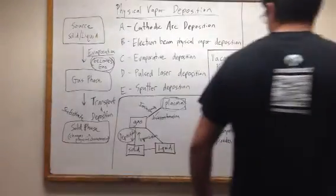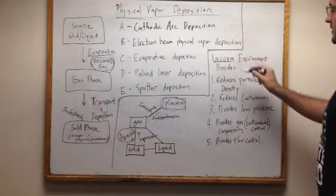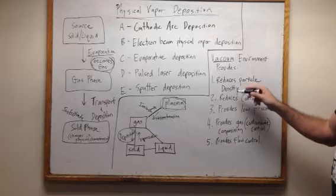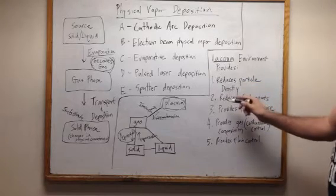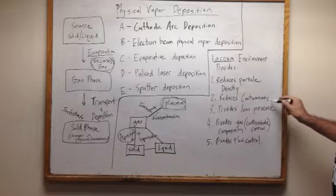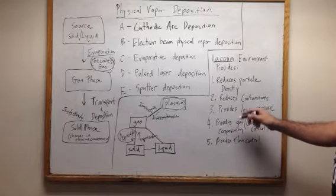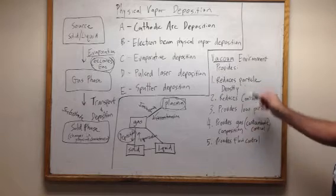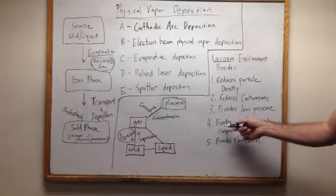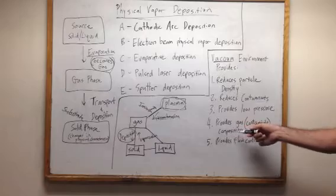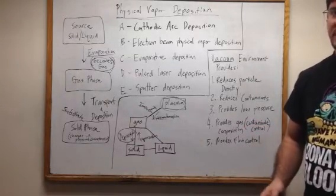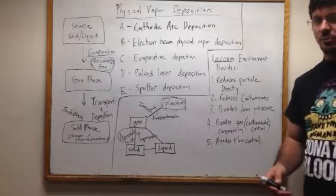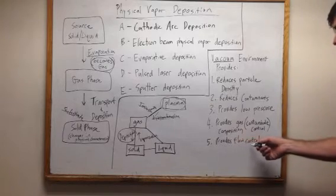The reason why we use a vacuum is that it reduces particle density, which means particles can move freely. It reduces contaminants, as you'll see in point four. It provides a low pressure for the particles to move around. It provides gas composition control — you can control the levels of different types of gas, say if you use argon or any other noble gas. And it provides flow control.